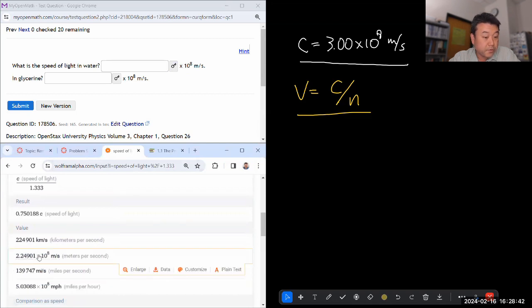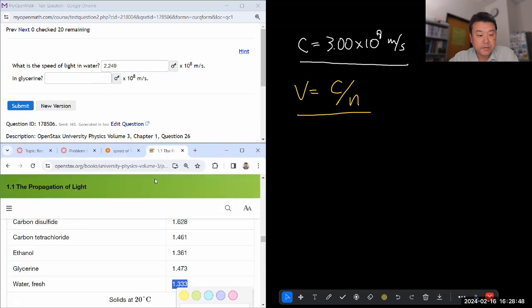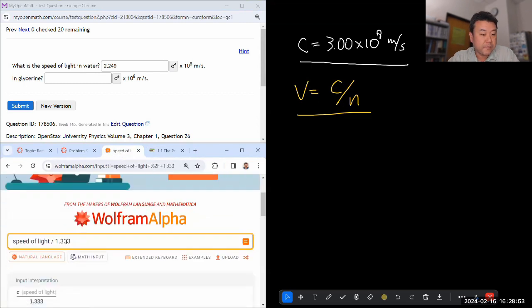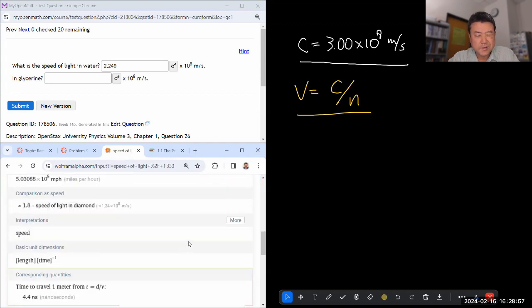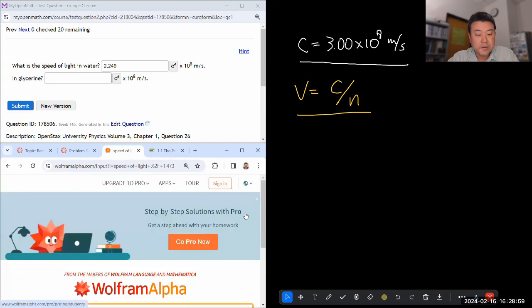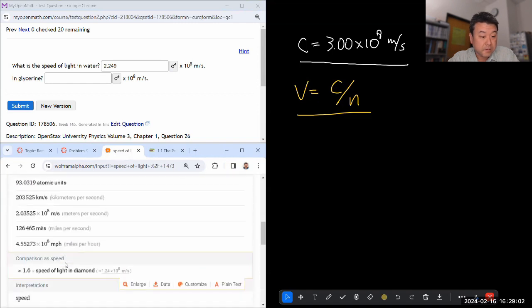2.249. Okay, interesting. Let's do glycerin too. So glycerin was 1.473. We're going to use that instead of 1.333. And that's going to be a smaller number. 2.035 times 10 to the 8th. So just kind of a reading check question, not meant to be a difficult question.